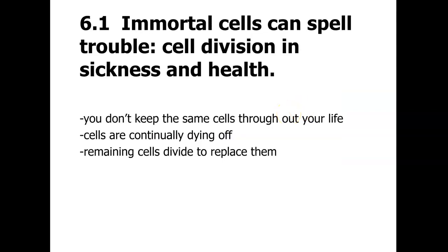Immortal cells can spell trouble — cell division in sickness and in health. You don't keep the same cells throughout your life; your cells are constantly changing. They go through so many replications before they finally undergo apoptosis, which is a regulated or programmed cellular death. They're continuously reproducing themselves, and the older ones are constantly dying off. The remaining cells go through mitosis and replace themselves.